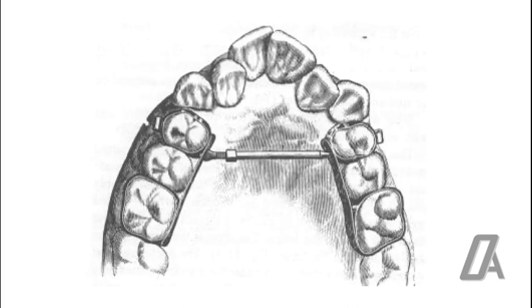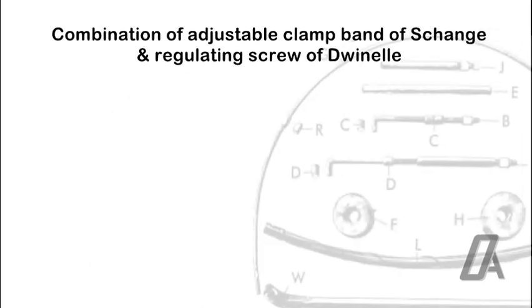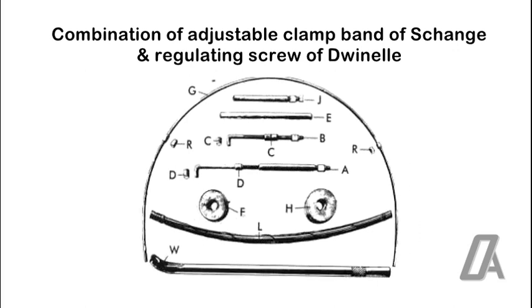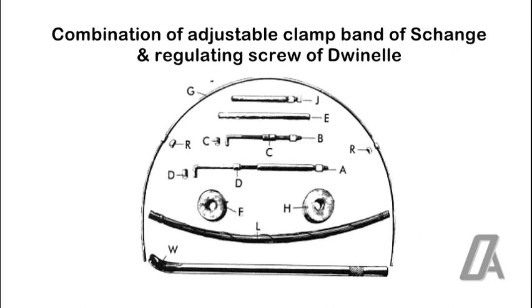In 1880, Angle introduced the first real appliance. It consisted of the jack and traction screw with a pushing action, and was a combination of adjustable clamp band exchange and regulating screw of Dwinnell.